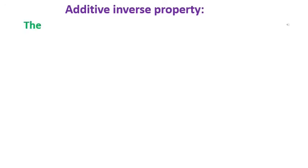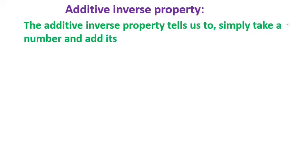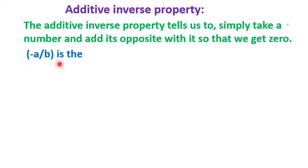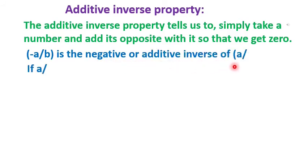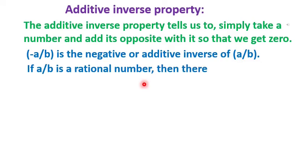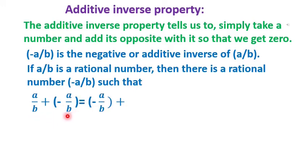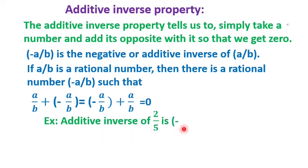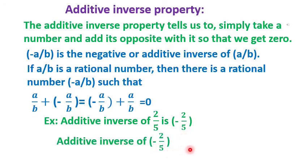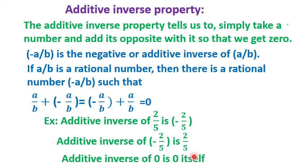Additive inverse. The additive inverse property tells us to take a number and add its opposite so that we get 0. Minus a/b is the additive inverse of a/b. If a/b is a rational number, then a/b plus (−a/b) equals 0. For example, the additive inverse of 2/5 is −2/5, the additive inverse of −2/5 is 2/5, and the additive inverse of 0 is 0 itself.